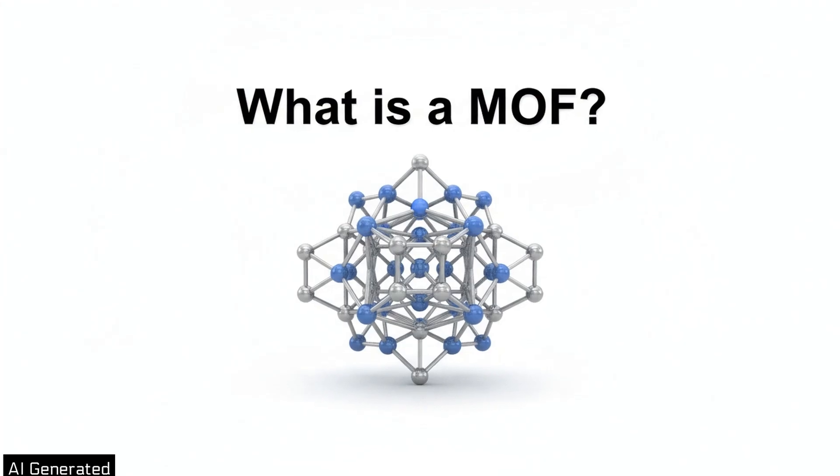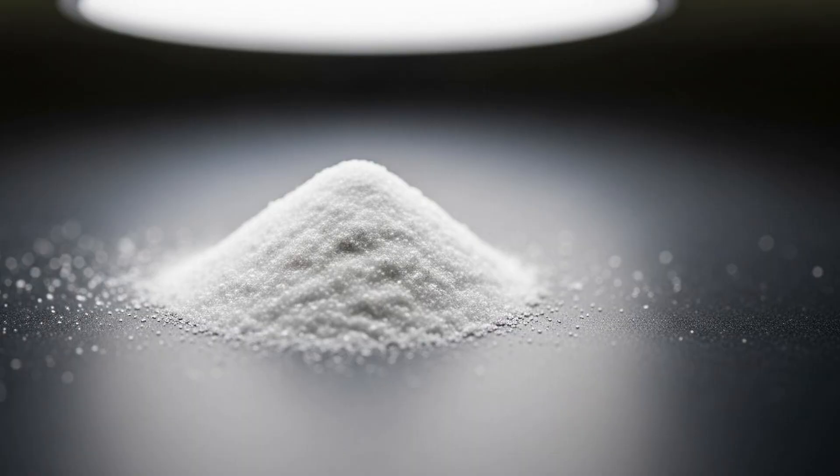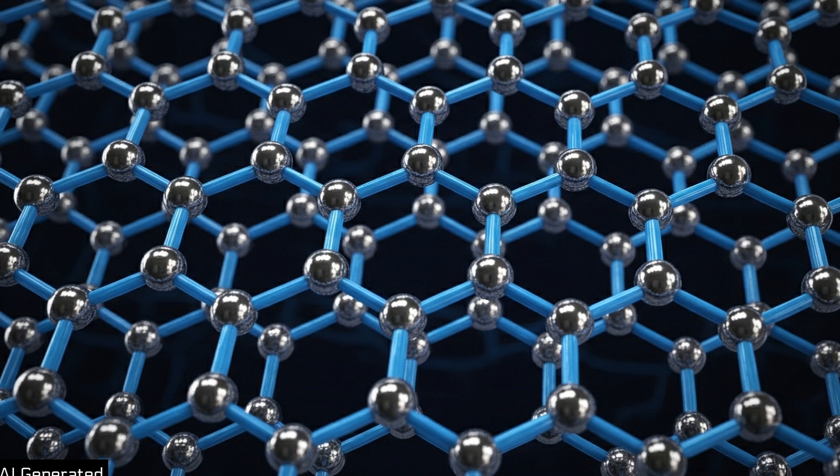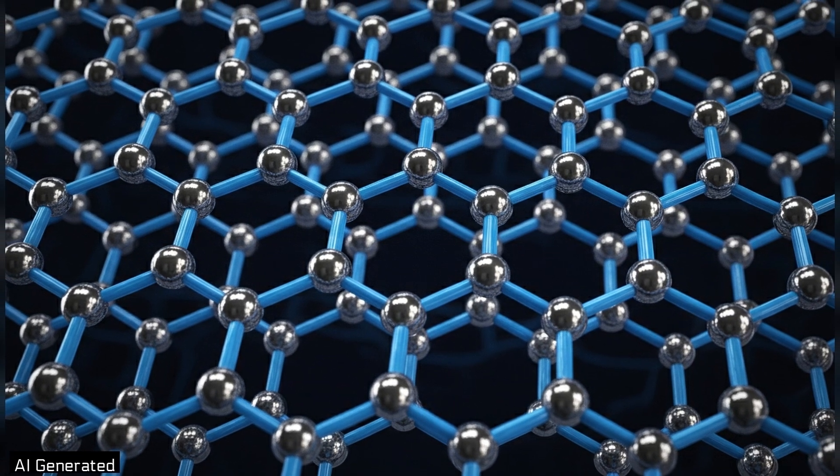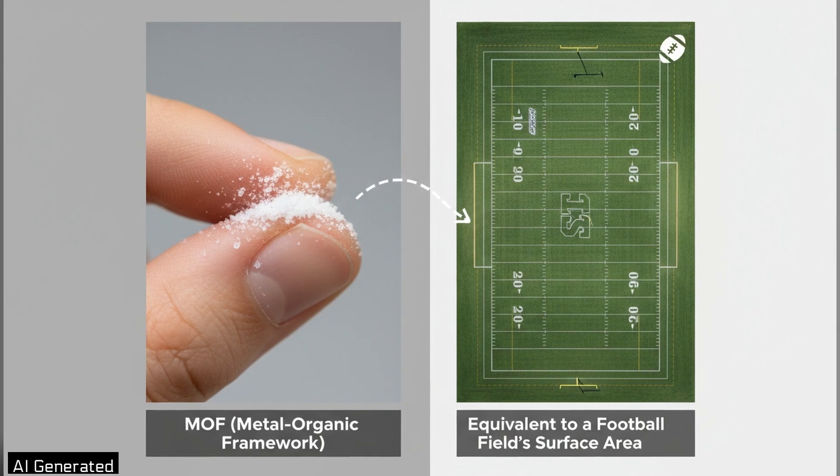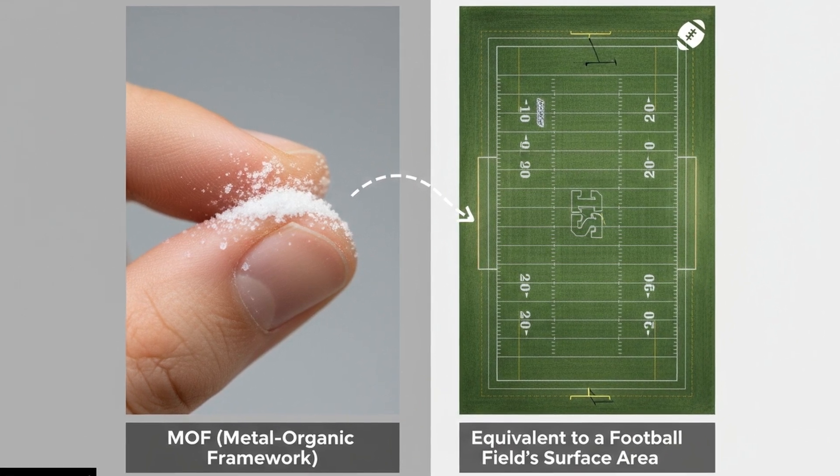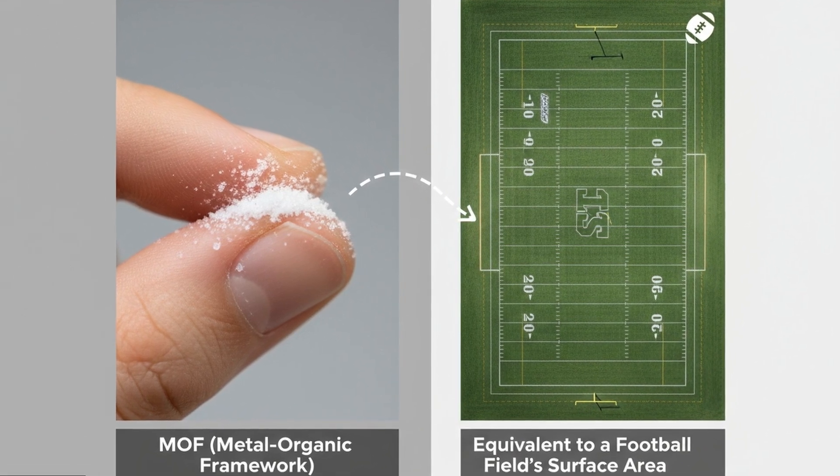So what makes an MOF so special? At first glance it looks like an ordinary powder, but zoom in and you'll find an intricate lattice riddled with nanoscale pores. That honeycomb interior gives a single gram of MOF an internal surface area roughly equal to a football field.